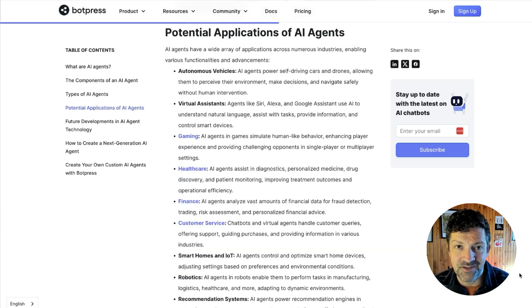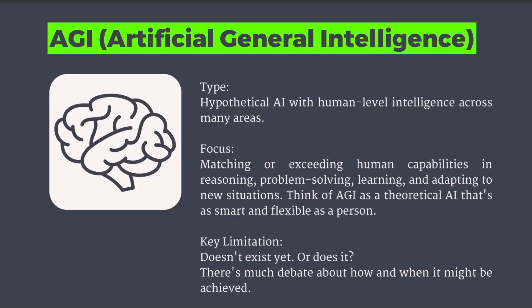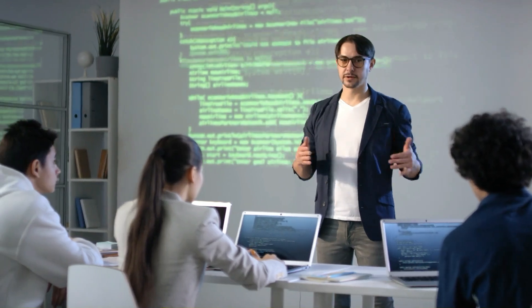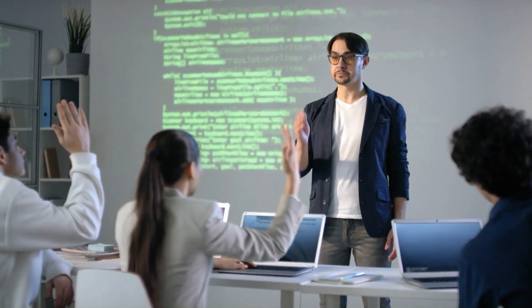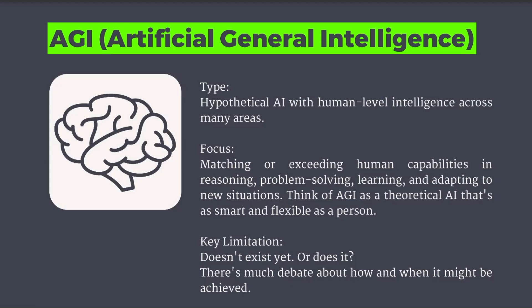Now we're getting into AGI — one of the biggest buzzwords in all of AI, it stands for artificial general intelligence. This is basically human-level intelligence across many areas: matching or exceeding human capabilities in reasoning, problem solving, learning, and adapting to new situations. A key distinction is that AGI is actually learning and improving as it goes. You could argue GPT-4 can do a lot of these things already, but the one thing it can't do is continuously learn and update itself. That continuous self-enhancement is what I think of when I think of AGI.